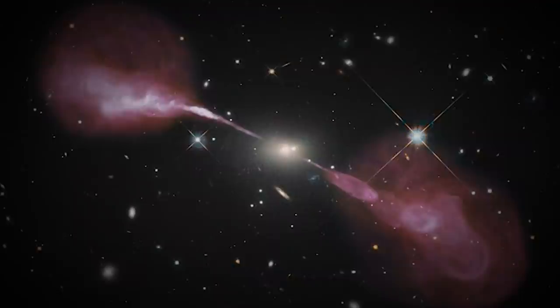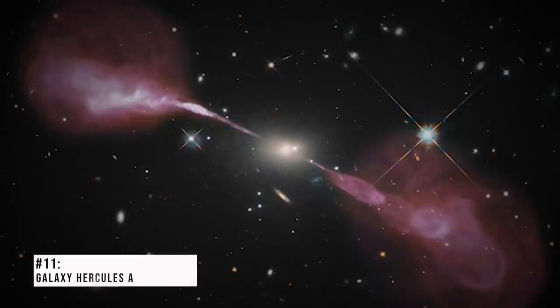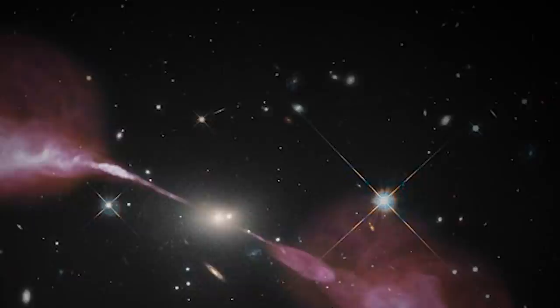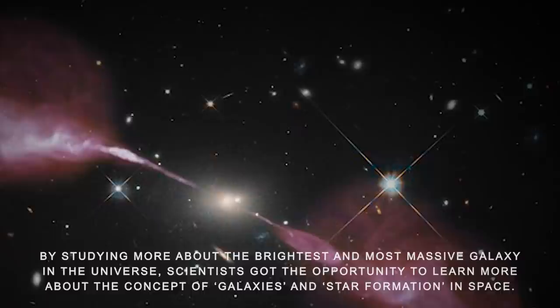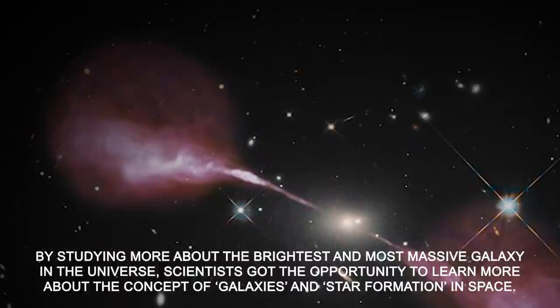Number 11. Galaxy Hercules A. This elliptical galaxy named Hercules A is about 1,000 times more massive than the Milky Way. The image is a multi-wavelength view of this very radio galaxy. By studying more about the brightest and most massive galaxy in the universe, scientists got the opportunity to learn more about the concept of galaxies and star formation in space.